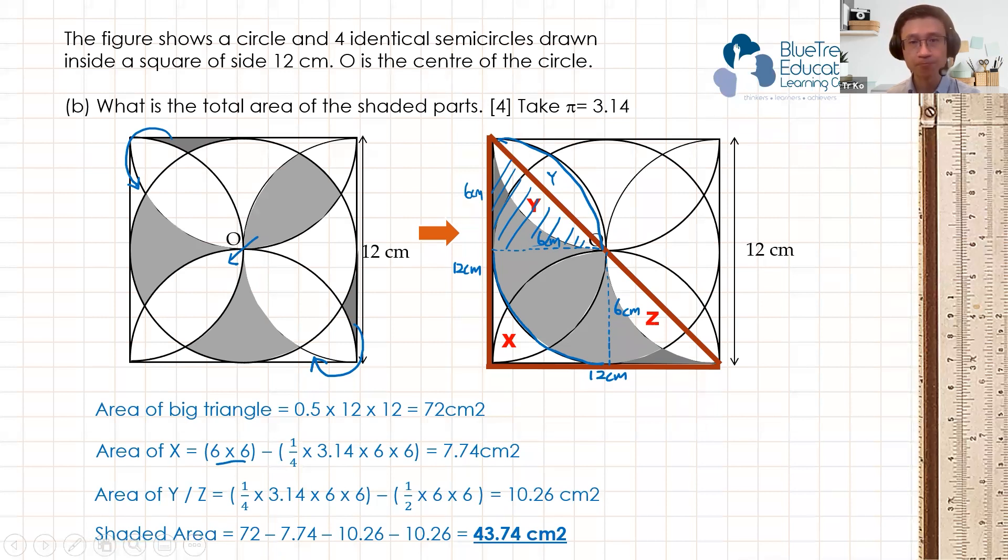The whole shaded area is the area of the big triangle, which is 72. So 72 is the whole triangle, take away the area of X, take away Y, take away Z. And Y and Z are the same value because they are the same area. And we get 43.74 square centimeters.